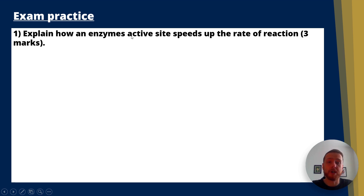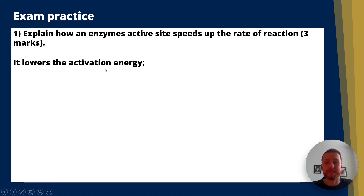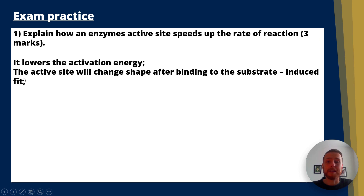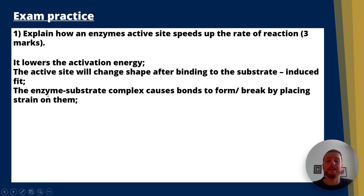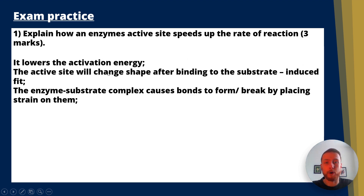Exam question one: Explain how an enzyme's active site speeds up the rate of reaction — worth three marks. The answer: first mark, it lowers the activation energy. Second mark, the active site changes shape after binding to the substrate — the induced fit. Third mark, the enzyme-substrate complex causes bonds to form or break by placing strain on them. AQA wants you to know about activation energy, the induced fit model, and the enzyme-substrate complex causing bonds to form or break by placing strain upon them.